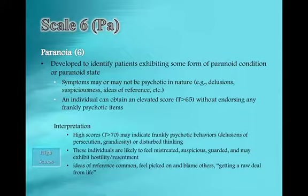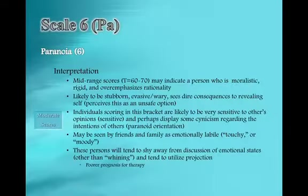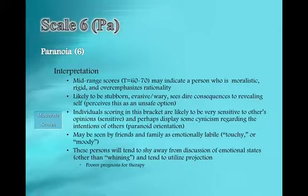Scale six is paranoia. You could see how scale four elevated with scale six could create some problems — somebody who's maybe paranoid with antisocial features, as indicated on scale four, would be a difficult client to work with in treatment. A little paranoia is good — perhaps I say that because I tend to fall more in the 56 to 60 range, so maybe I've just defined my own profile a little bit.